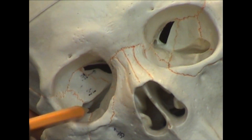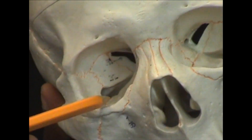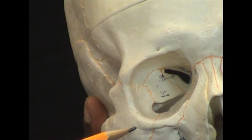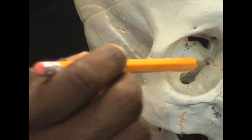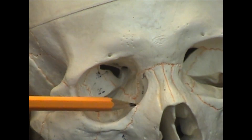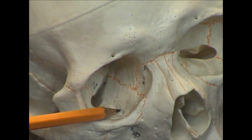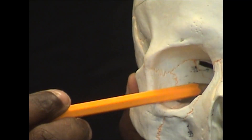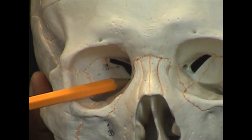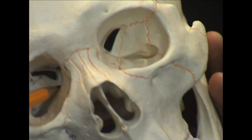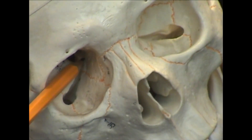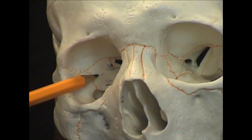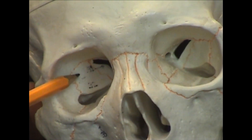Making our way down inferiorly is the inferior orbital fissure. Now the bones that make up the orbit are the following: you have the zygomatic bone right here; this plate is the orbital surface of the maxilla bone; all the way in the back, that is the sphenoid bone, which surrounds the optic canal. The sphenoid bone also continues on the lateral wall of the orbit — that's the greater wing of the sphenoid bone.